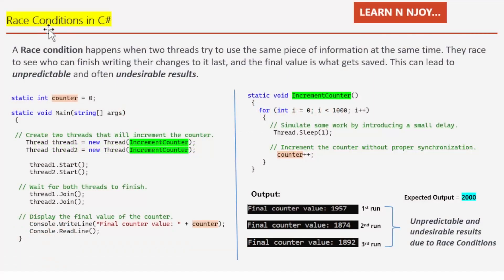Race conditions: what is a race condition? A race condition occurs when two or more threads simultaneously access and manipulate a shared resource without proper synchronization. It's like a race where threads compete to modify the resource, and the result can be unpredictable and undesirable — because the thread that finishes writing its changes last is the one whose changes get saved.